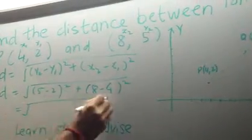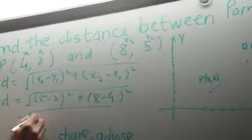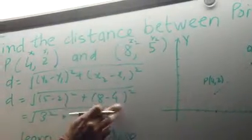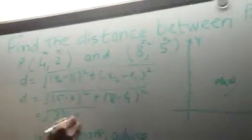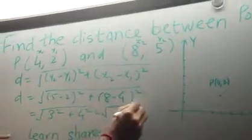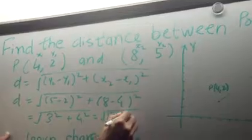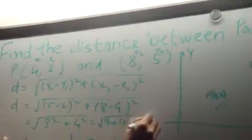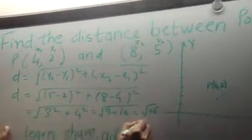And if we simplify this, then 5 minus 2 is 3 square and plus 8 minus 4 which is 4 square. This leads to 9 plus 16 or square root 25 and the answer is 5.